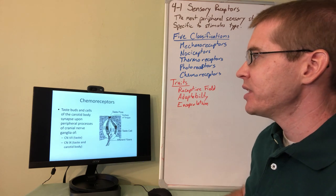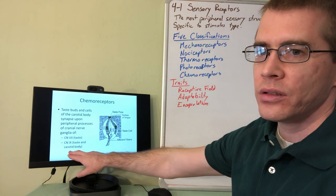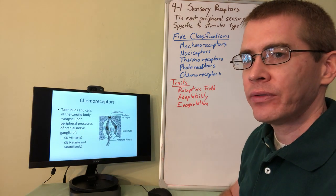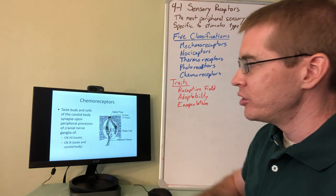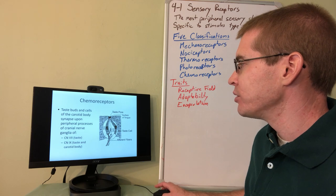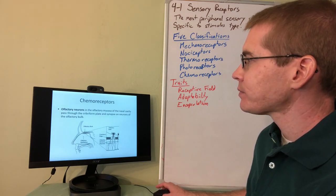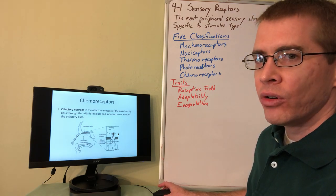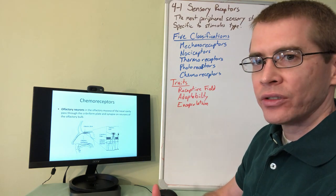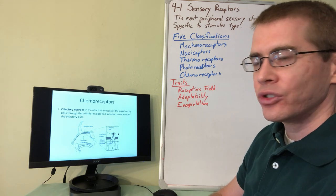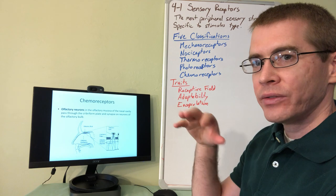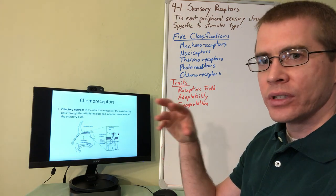Here's an example of the taste bud chemoreceptor — a structure similar to that in the carotid body. The olfactory epithelium chemoreceptors detect any substance that enters your nasal cavity and respiratory tract, signaling that certain chemical signatures are present. There are very specific chemoreceptors within the olfactory epithelium that detect all of these different smells and allow you to identify them based on mixtures of different odors.